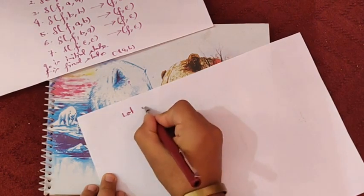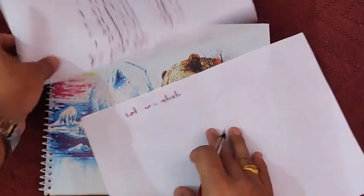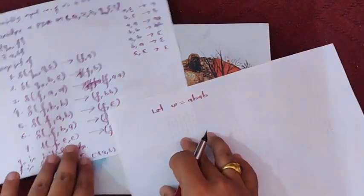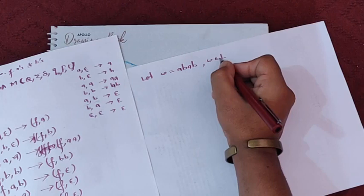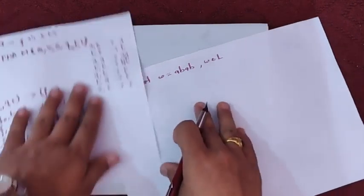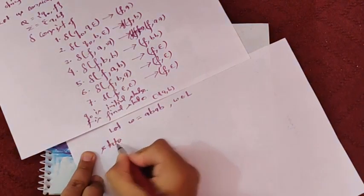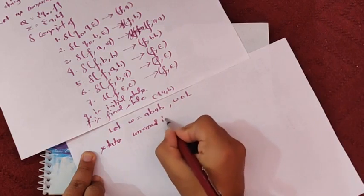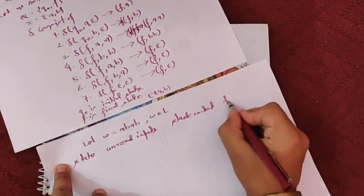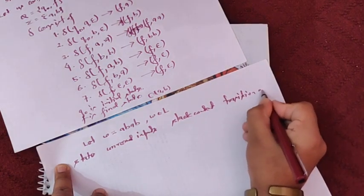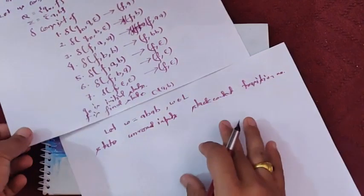Let us consider an example. Let w equal A B A B, starting with A. We verify that w belongs to the language L. We construct a table with columns: state, input read, stack content, and transition number. This table is constructed according to my method — you can write it in your own way.